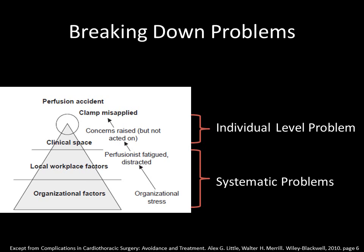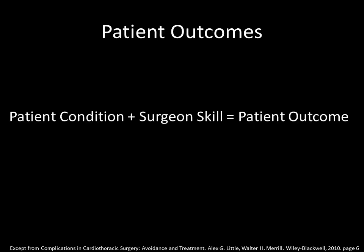You are likely on track to discovering a good problem if it occurs at multiple hospitals and the causes are similar at each. Most people think that a patient's treatment outcome is related to only two factors: the patient's condition and the surgeon's skill. The severity of a patient's condition plus the surgeon's ability to treat that condition sum up to equal the total expected treatment outcome for the patient.